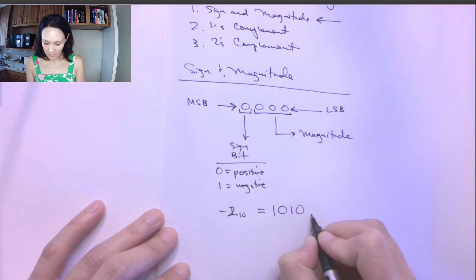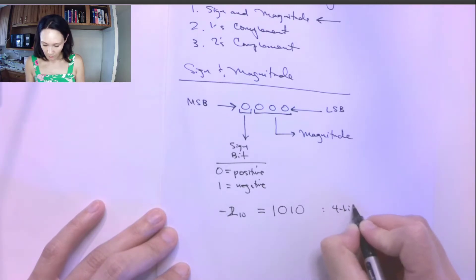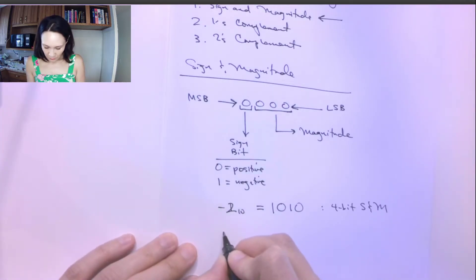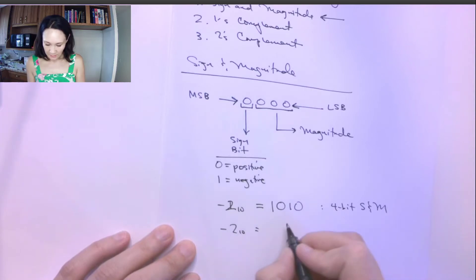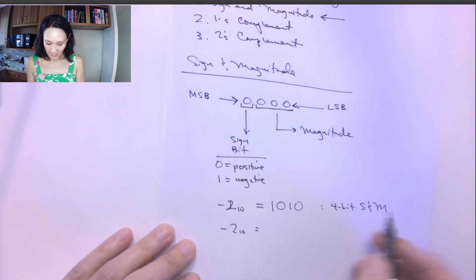Zero. So this is four bit sign and magnitude. But to represent negative two in, say, for example, three bit sign and magnitude...